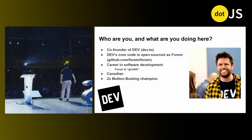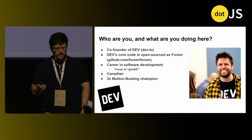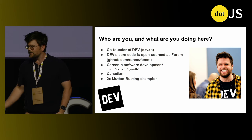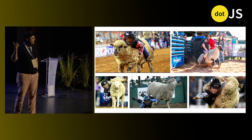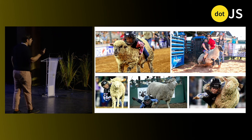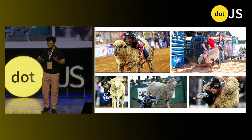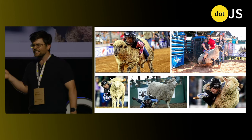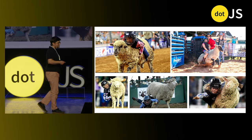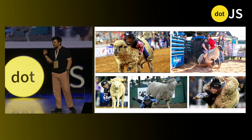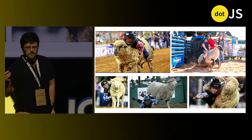One fact about me: I am a two-time mutton-busting champion back in Nova Scotia when I was young. Mutton-busting is the ancient sport of strapping children into a hockey helmet, plopping them on top of a sheep, letting the sheep run wild, and then timing how long it takes for the child to fall off the sheep. So if my ideas sound like they come from someone who has fallen off one too many sheep in their lifetime, please show some grace.